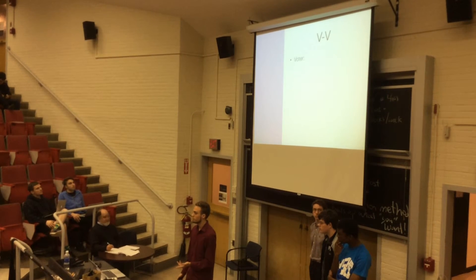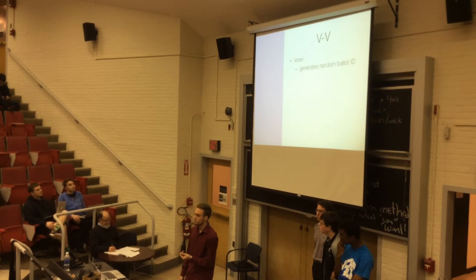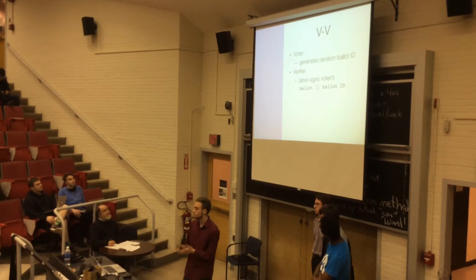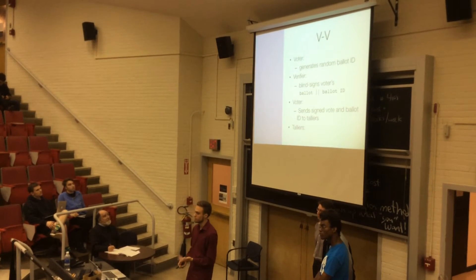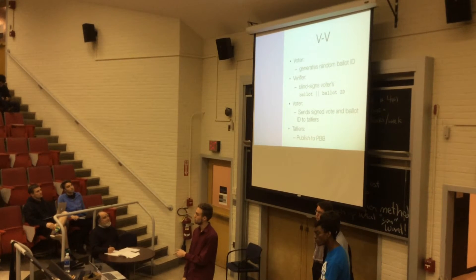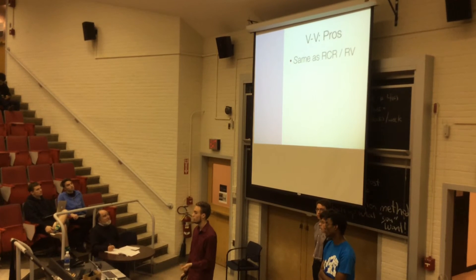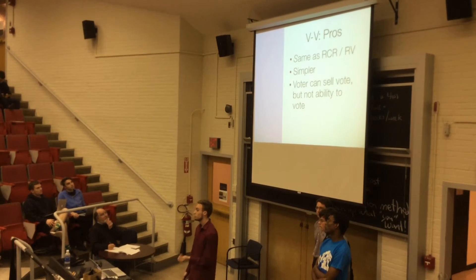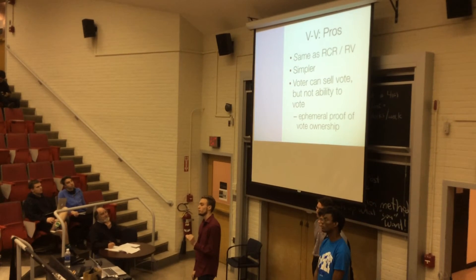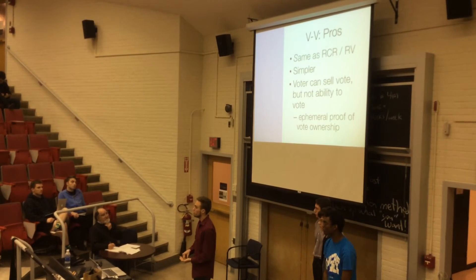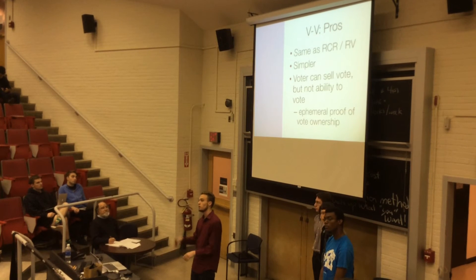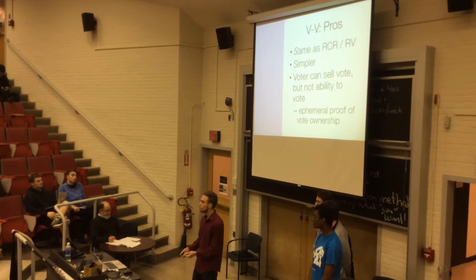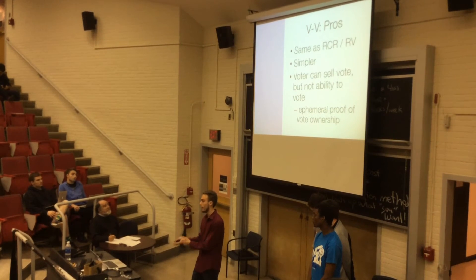Our final simplification involves the voter generating a random ballot ID, filling out his ballot, and then having the verifier sign his ballot and ballot ID. He then simply submits the signed vote and ballot ID to talliers, and the talliers verify the signatures and publish to their public bulletin boards. This system has the same pros as the RCR and RV schemes. It's also simpler, and harder to sell the vote, because the proof that a voter owns a vote is ephemeral — the voter can prove he is voting a certain way once he gets the signed ballot ID back from the verifier, because it hasn't been published yet. But once he sends it to the talliers and it's published, it's in the public domain, so anyone can claim it was their vote but has no way of proving it actually was.